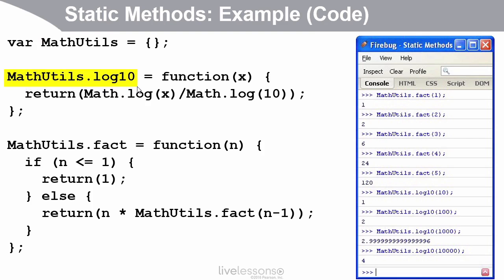One, syntactically, it'll look convenient because all of my math utilities will be grouped together under the same name. They all start with MathUtils dot something. And secondly, I don't have to worry about name conflicts. If someone else in my team makes a method called log10, as long as they don't stick it in the MathUtils class, I don't have to worry about a name conflict.